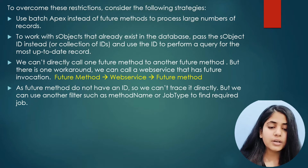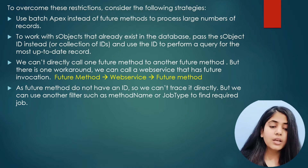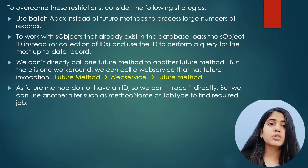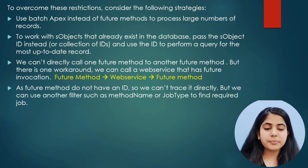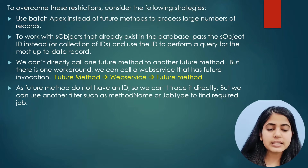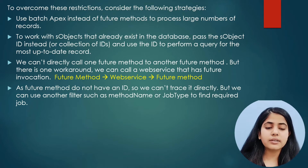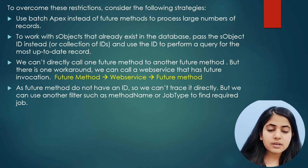To overcome these restrictions, consider the following strategies. Instead of using future methods for a large number of data records, use batch Apex to process large numbers of records. Since we cannot pass sObjects directly as parameters, if the requirement is to pass an sObject, instead pass the sObject ID or a collection of IDs, then use those IDs to query the most up-to-date records. We cannot directly call one future method from another future method.